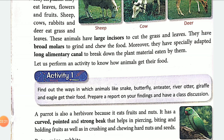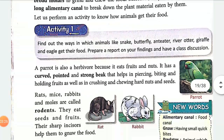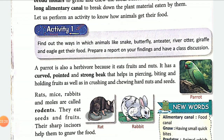There is a class activity where we need to find out how various animals get their food. The animals to research include snakes, butterfly, anteater, river otter, giraffe, and eagle — how each gets their food. Students will prepare a report and share it when the class meets again.